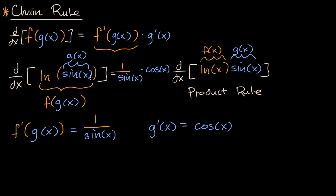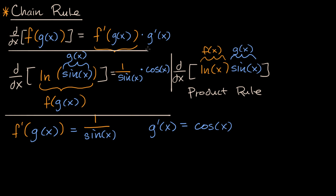To make sure you don't fall into one of these misconceptions: recognize the composition — this is not the product of natural log of x and sine of x, it's natural log of sine of x. When applying the chain rule, take the derivative of the outside with respect to the inside: derivative of natural log of x is 1/x, so applied when the input is g(x), it's 1/sine(x). Then multiply that times the derivative of the inner function — don't forget this step.